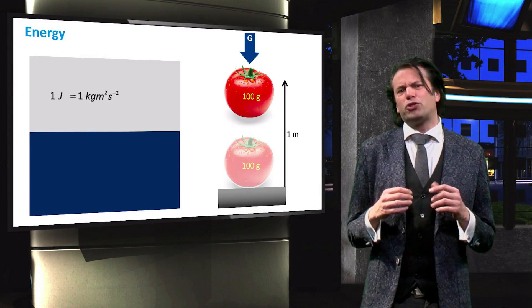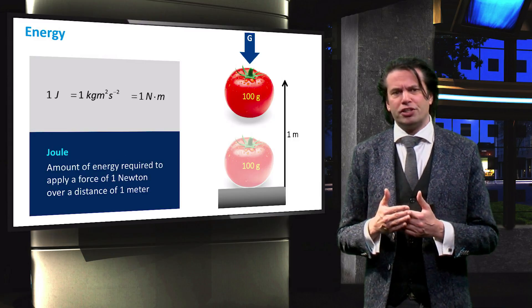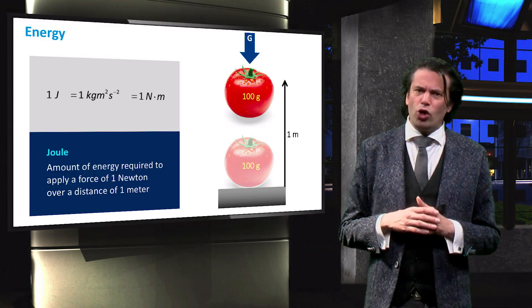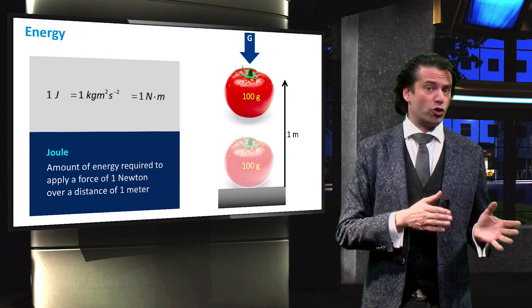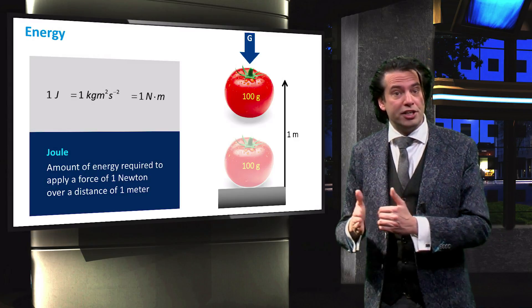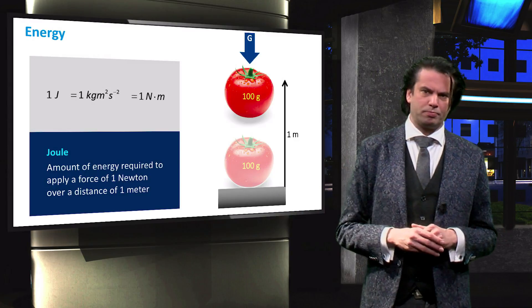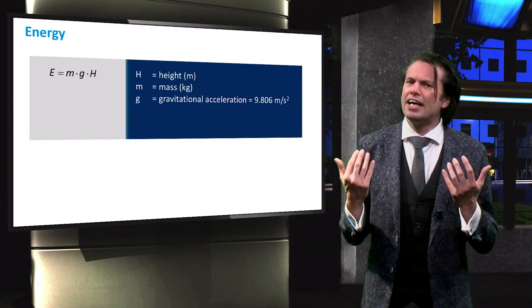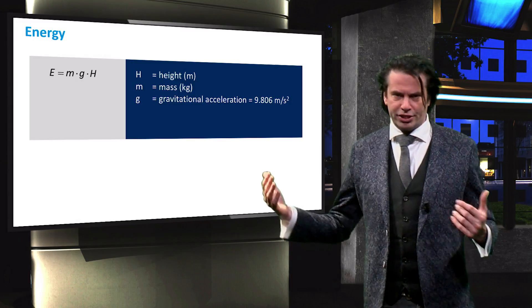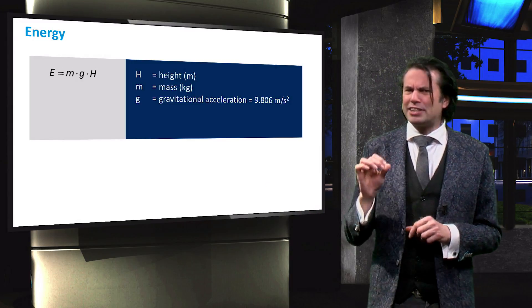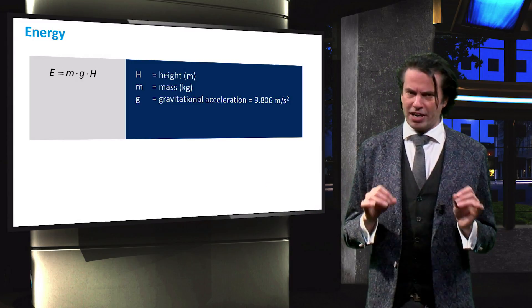Since energy is equal to a force applied over a certain distance, one joule can also be defined as the amount of energy required to apply a force of 1 newton over a distance of 1 meter. We just defined energy as the ability to exert a force over a certain distance. But that is not the only definition of energy.